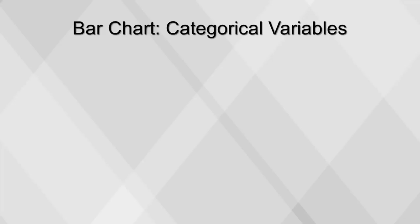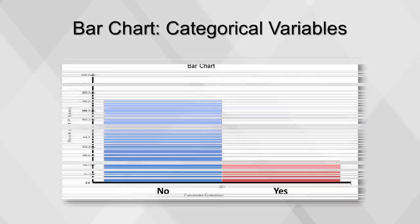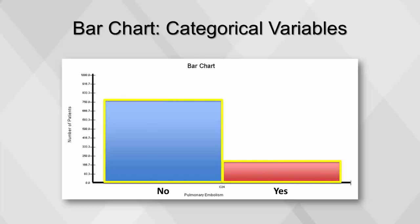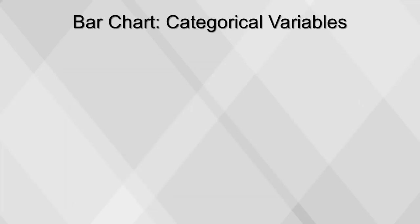A bar chart translates the data from frequency tables into a pictorial representation. It depicts categorical variables and shows frequency or proportion in each category. This bar chart looks at the frequency distribution of patients with pulmonary embolism, which occurs when one or more arteries in the lungs get blocked by a blood clot. Notice that this is a binary variable with only two possible responses — yes and no — where yes is coded as 1 and no is coded as 0. It's much easier to extract information from a bar chart than from a table.